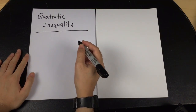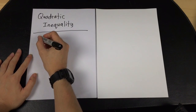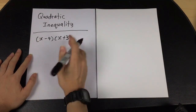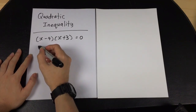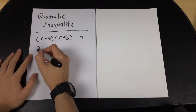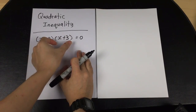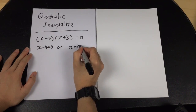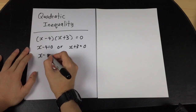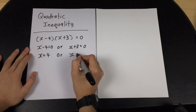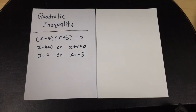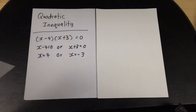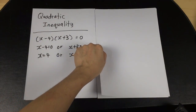The first mistake about the quadratic equation: for example, if we have (x - 4)(x + 3) equals zero — this is a quadratic equation — a lot of students definitely know how to solve this. They will say x - 4 = 0 or x + 3 = 0, so they can easily get x = 4 or x = -3. But when the same type of question goes into a quadratic inequality, it will be a totally different case.